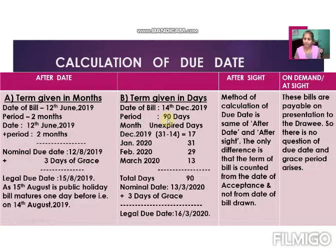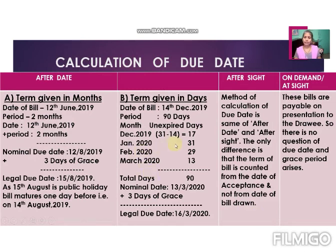The second type is after sight. The method of calculation is the same as after date, with only one difference: the term of the bill is counted from the date of acceptance, not from the date the bill was drawn. So in the question, an acceptance date will be given, and you calculate the due date from that date of acceptance.